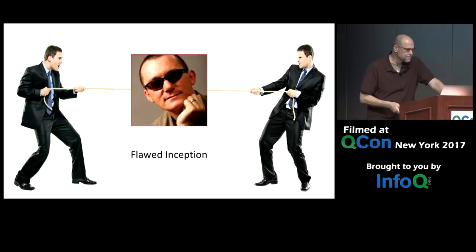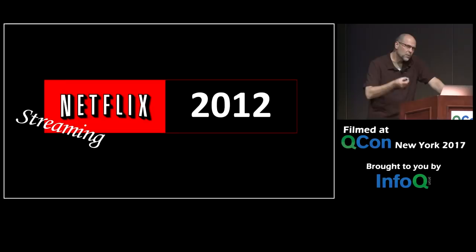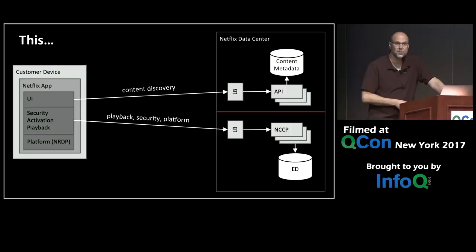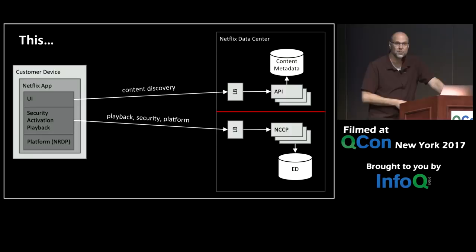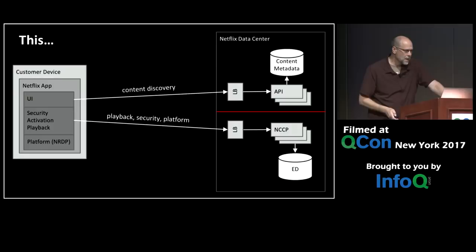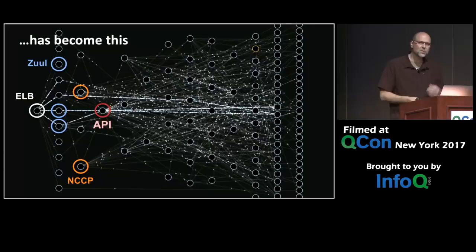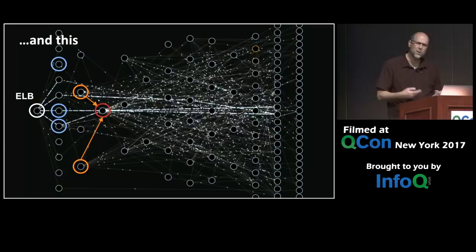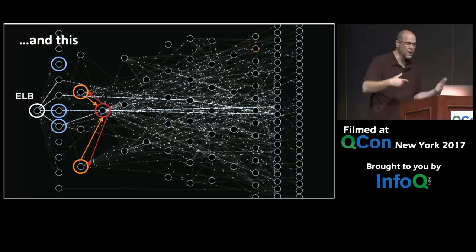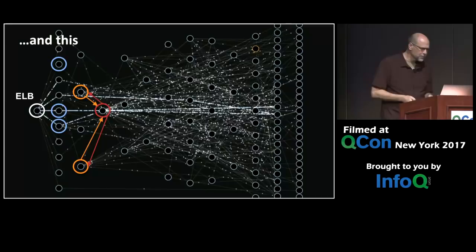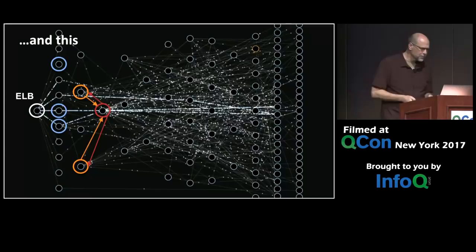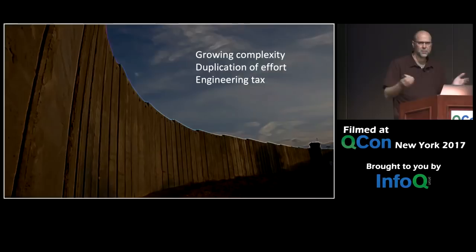Now I'm going to take us full circle and fast forward to 2012. The architecture we had lived with for several years — this split between content discovery and playback functionality — had become a soup of microservices with a new proxy service called Zuul for dynamic routing, but we still had NCCP and still had API. We had weird things going on where API was calling NCCP and vice versa — these two edge services were tangled up in almost circular dependencies. And the wall was still there, with growing complexity, duplication of effort, and friction for device engineers who had to work with both teams' different protocols and security mechanisms.